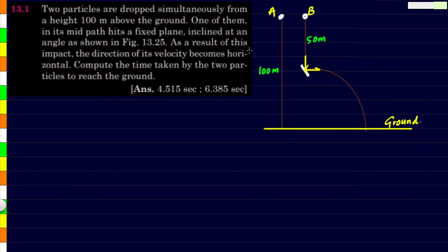Here is another problem on kinematics. Two objects are dropped from a height of 100 meters simultaneously, and we need to find the time taken by both to reach the ground.